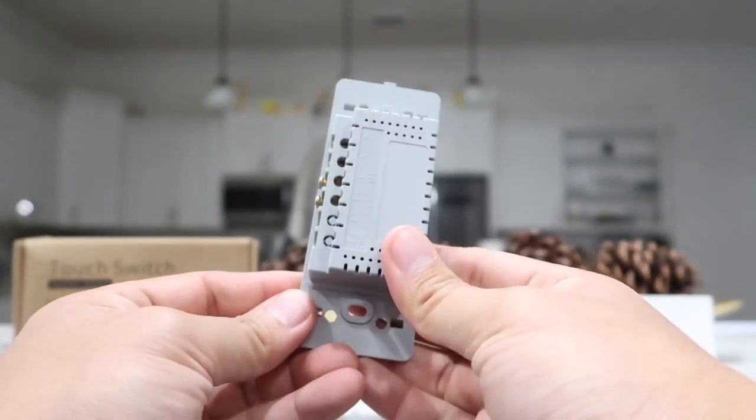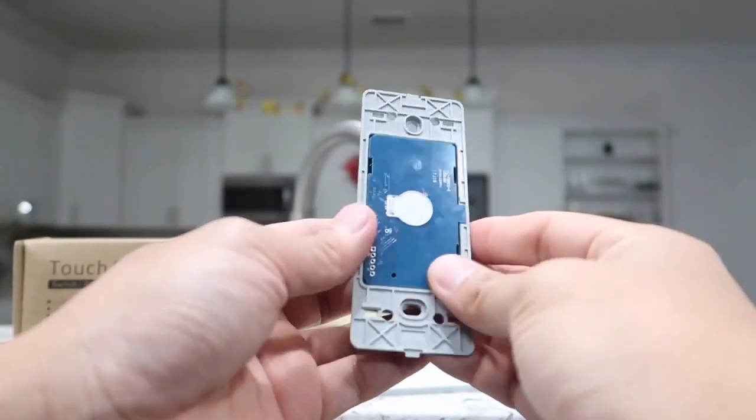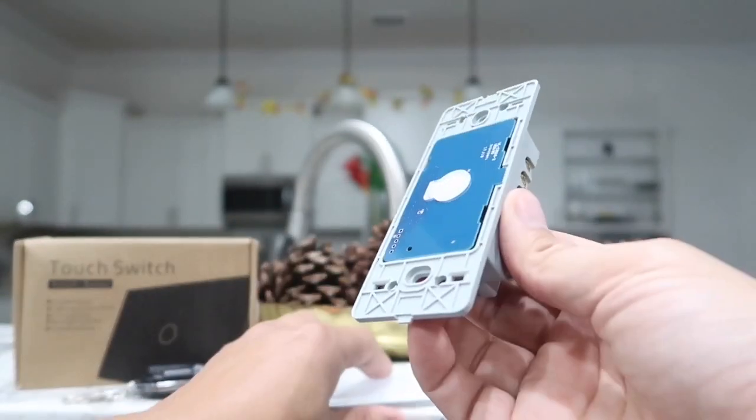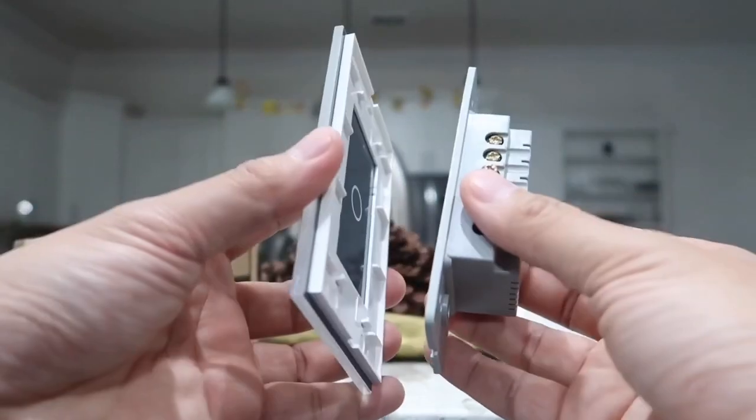And you will notice in just a second that the light switch in my existing home right now does have a line in wire, line out wire and a ground wire. However, again, we will only need to use two of the wires with this light switch, which is the line in and line out wires.